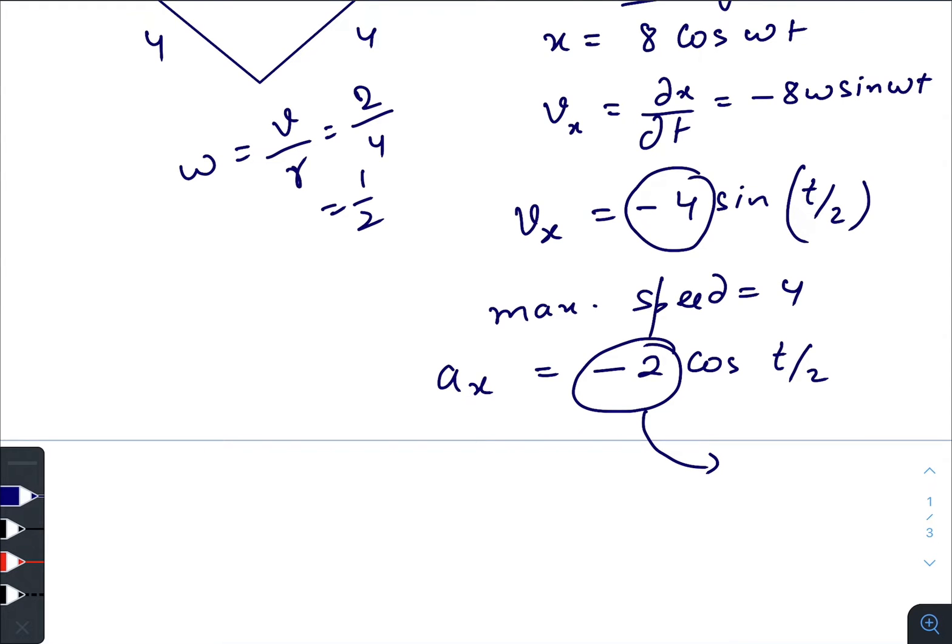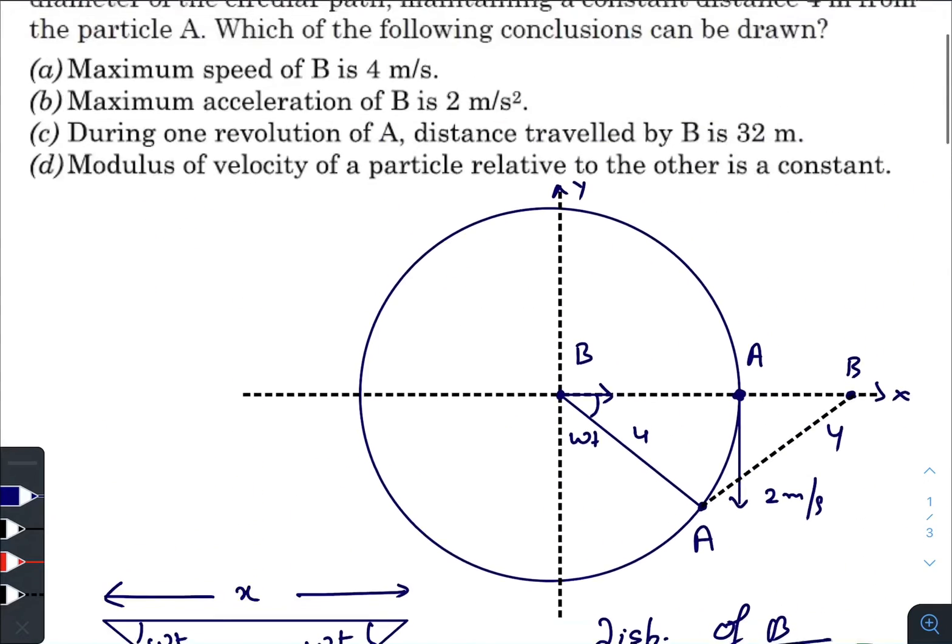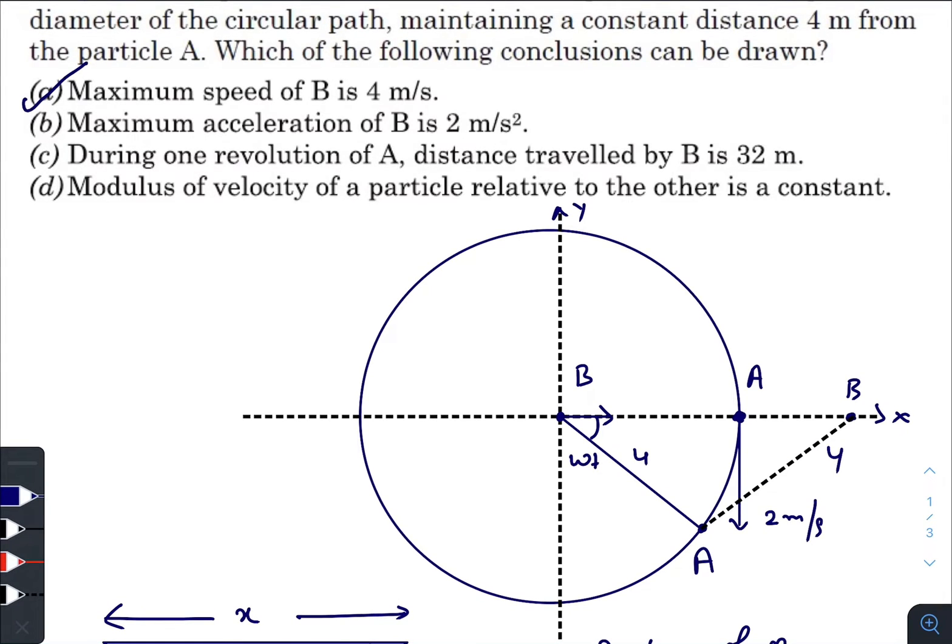Fine, so option A is correct, option B is also correct. During one revolution of A, distance traveled by B is 32 m.